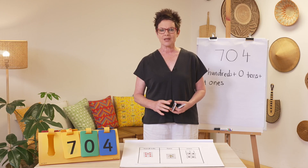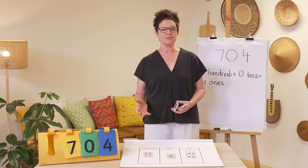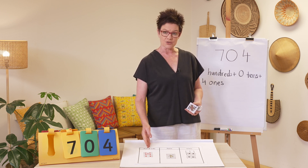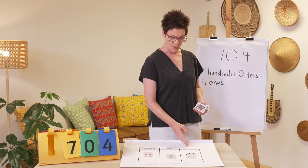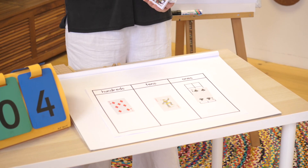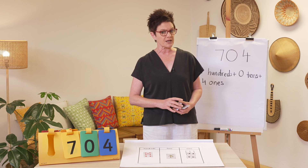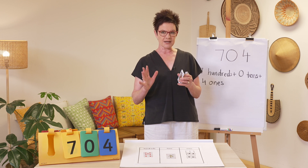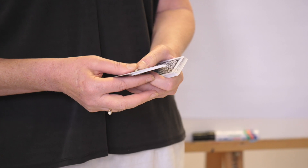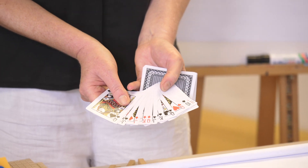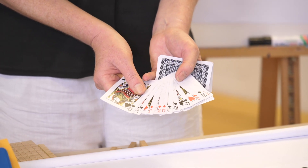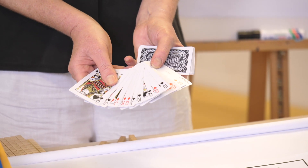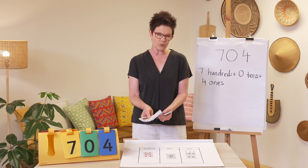Time to recap. Today we learned that zero means none of something, and we can find it sometimes in our hundreds, tens, or ones. We're going to play a game to help us practice even further — I'm going to call this the Joker Game. We need a pack of cards. Remove the picture cards — kings, jacks, and queens — and remove the tens. One joker stays on your placemat.